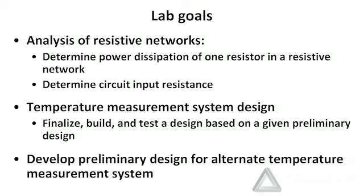Talking about resistive networks, we're going to do two things. We want to find the power dissipation of a single resistor in a resistive network, which will require some slightly different measurement techniques than we used in lab assignment one. Also, we're going to determine a circuit input resistance by wiring up the resistive network and measuring a voltage-current characteristic. From that characteristic, we can estimate the resistance as the slope of a straight line which fits the data. This process is identical to what we did in lab one — we're just doing multiple resistors now.